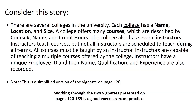Let's take a moment to consider this story to illustrate semantic and syntax errors. There are several colleges in the university. Each college has a name, location, and size. A college offers many courses described by their course number, name, and number of credit hours. The college also has several instructors. Instructors teach courses, but not all instructors are scheduled to teach during all terms. All courses must be taught by an instructor.